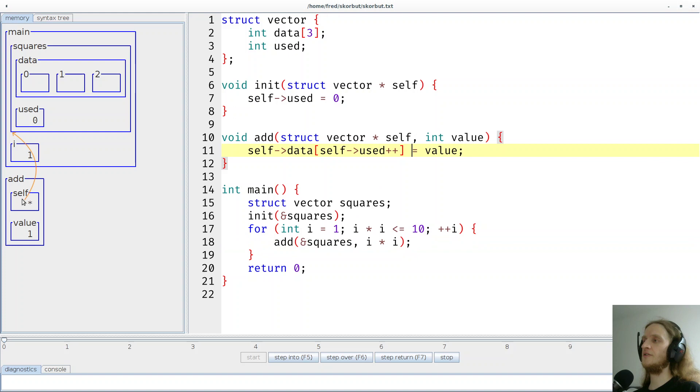And now we have the magical line 11. What does it do? It says, I want to access the data array at index zero. All right, that would be here. And I want to store the value, which is one in our case, the first square number basically. So one will be stored at index zero, which is here. And then the used counter will be incremented from zero to one. So we would expect a one in both places here. And that's indeed what happens.